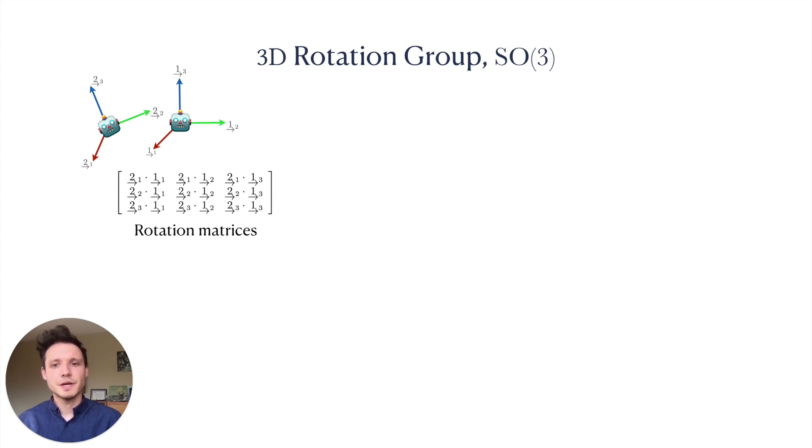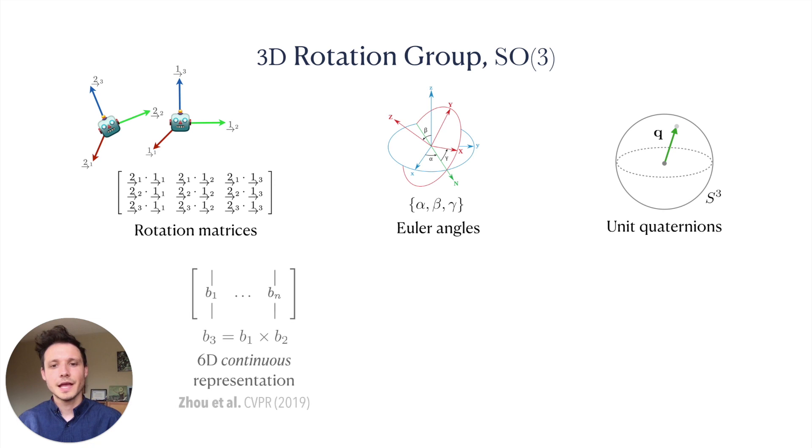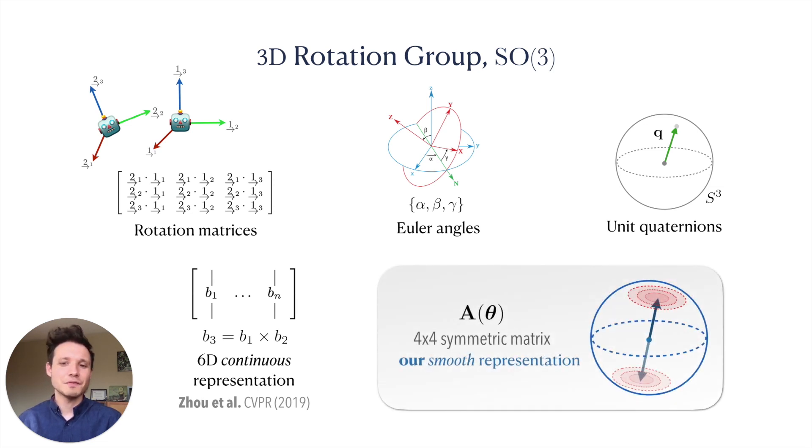In addition to such matrices, other ways to encode elements of SO3 include Euler angles and unit quaternions. The latter are a popular option in learning for their algebraic and geometric simplicity. However, Zhou et al. recently identified an important shortcoming of unit quaternions in the context of learned models and introduced their own 6D representation. Building off of their insights, we introduce our own novel representation of SO3 based on 4x4 symmetric matrices.